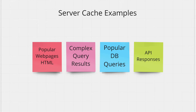You can also cache the results of popular queries. Say you have a bunch of articles on your website and most of the time users come for a few popular articles. Instead of querying the database for those articles every time, you can stick data related to the popular articles in your server cache. Lastly, you can cache the results from external API responses, which helps you avoid expensive API calls and network latency.